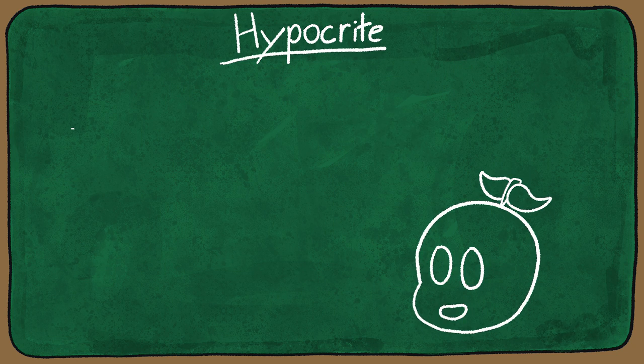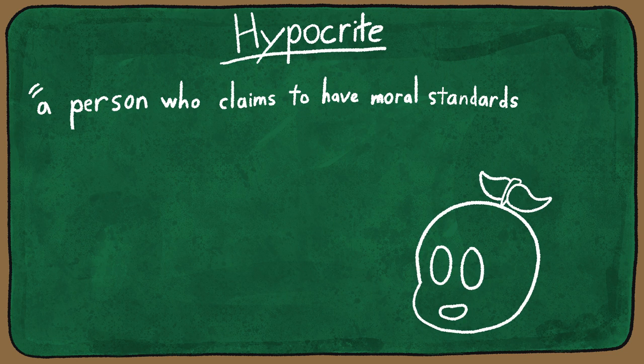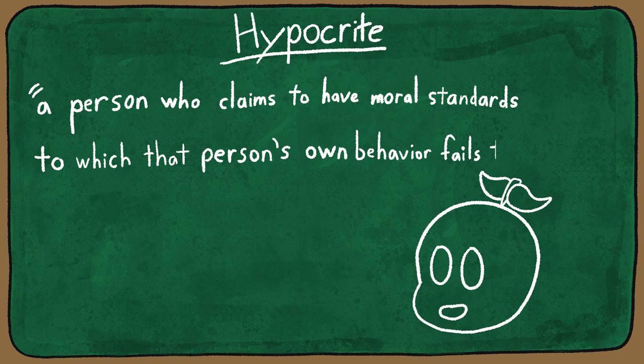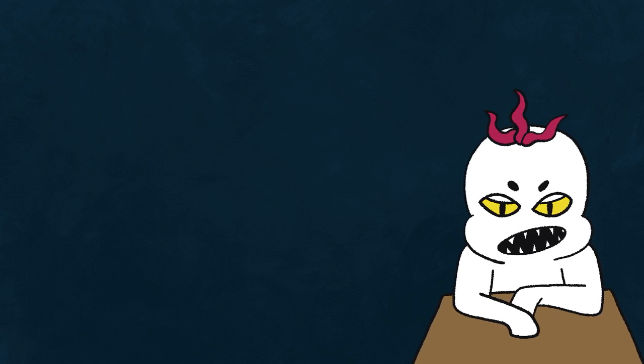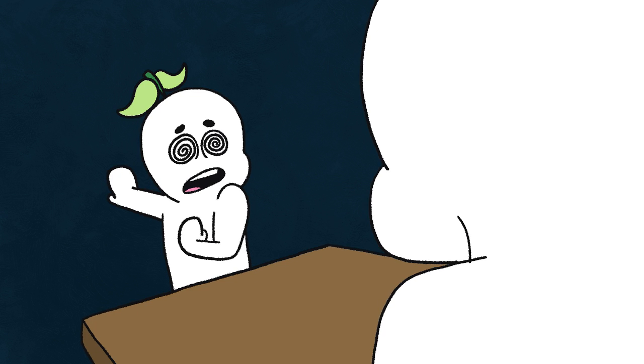The definition of a hypocrite is a person who claims to have moral standards to which that person's own behavior fails to conform. So when someone exhibits this contrary behavior, it can lend itself to some strong emotions, like feeling tricked.